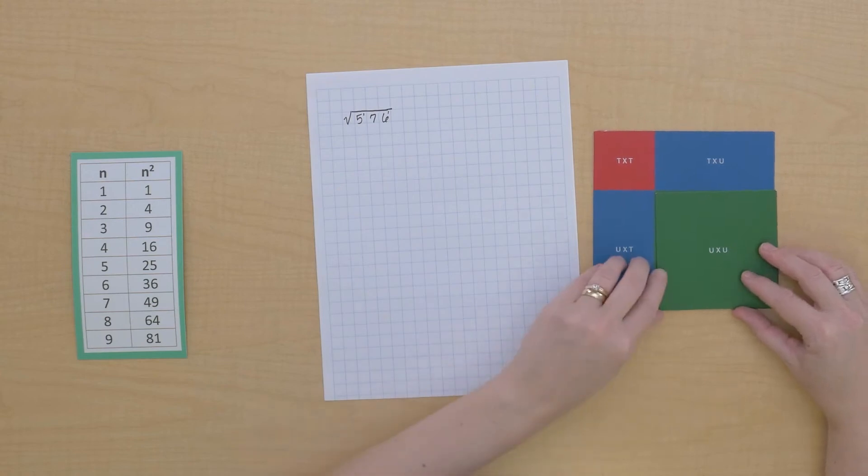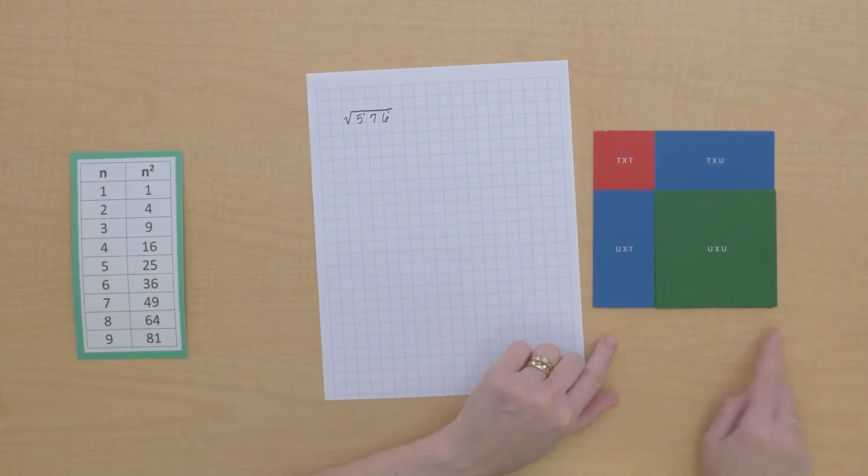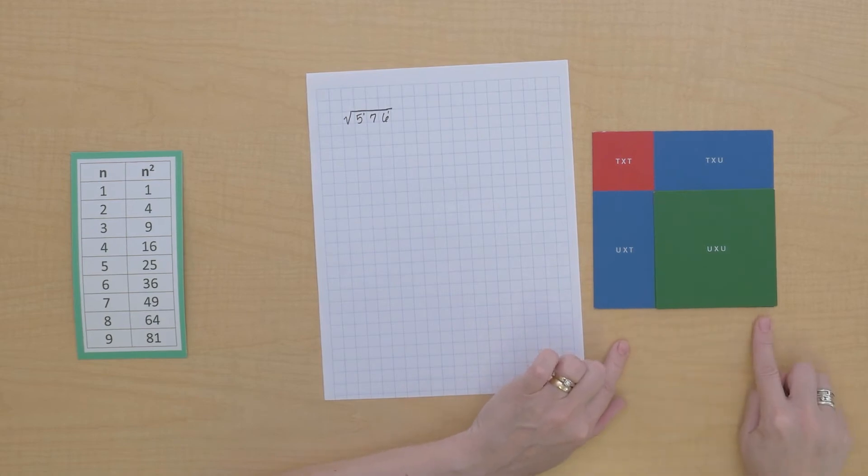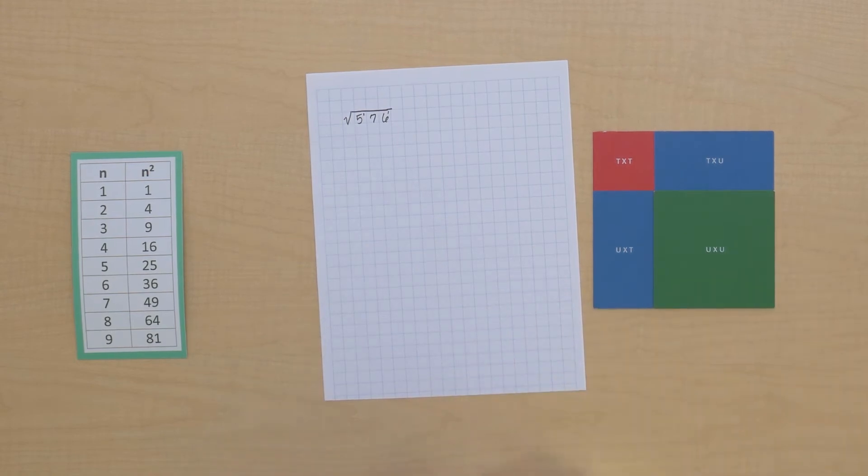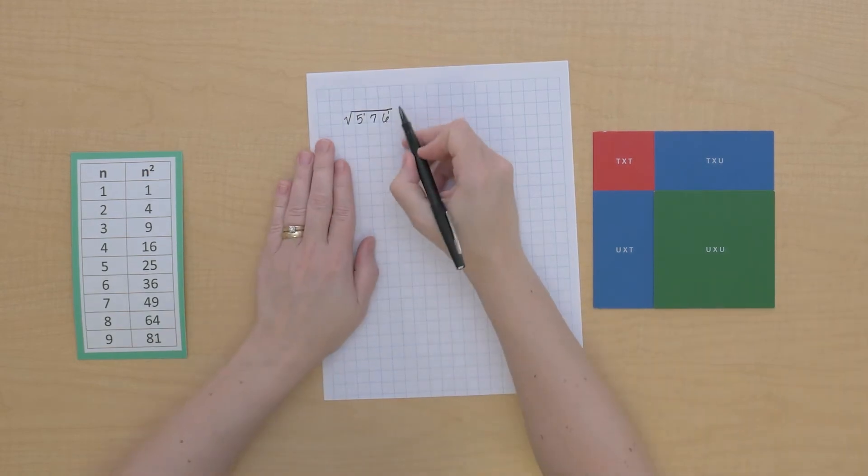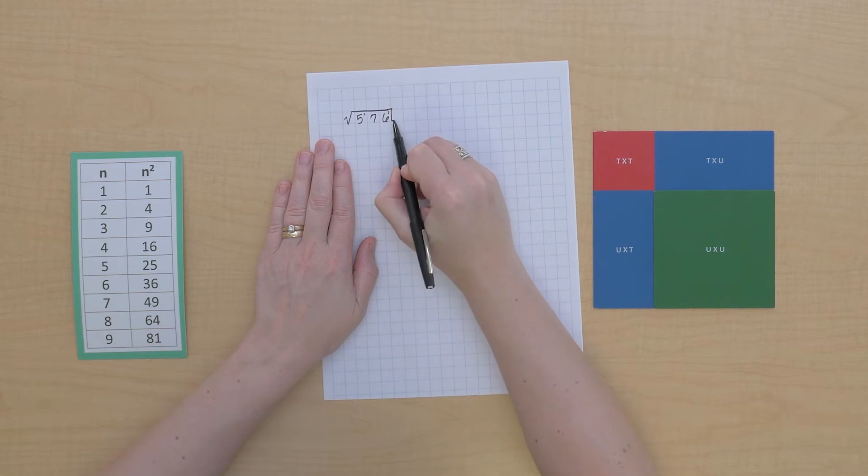We can see that here that it will build a binomial square just like this and we can find the root of it here because we know units times units makes a square, tens times tens makes a square. So we know that we'll have in our answer we'll have a tens digit and a units digit.